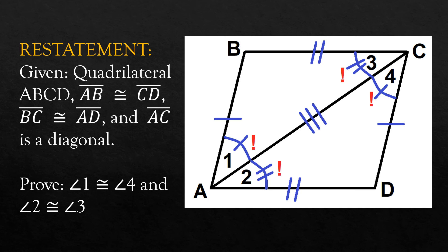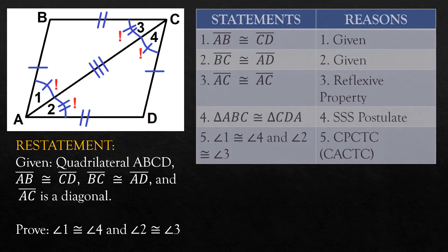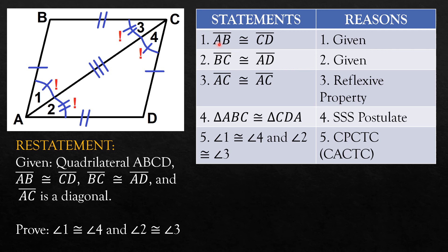We now start with the formal proof. The first statement is line segment AB is congruent to line segment CD, which was given. Line segment BC is congruent to line segment AD, which was given. And line segment AC is congruent to line segment AC by reflexive property. So we now have three parts — side, side, side — and triangle ABC is congruent to triangle CDA by SSS postulate. Finally, angle 1 and angle 4, and angle 2 and angle 3, are congruent respectively by CPCTC, or specifically CACTC.